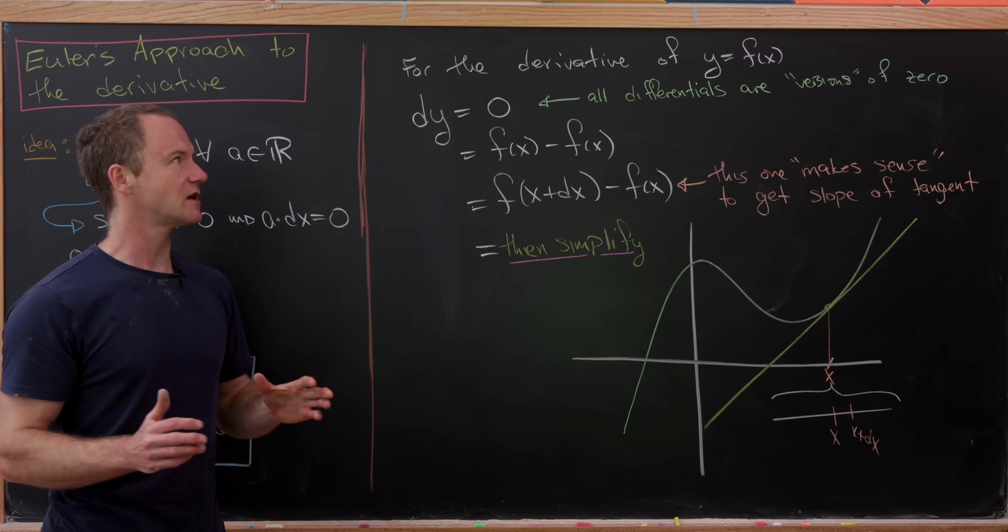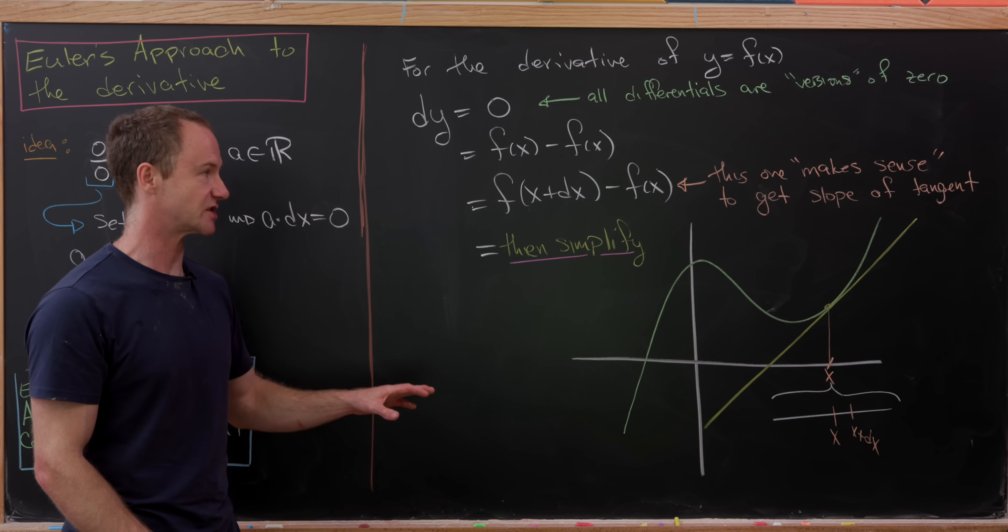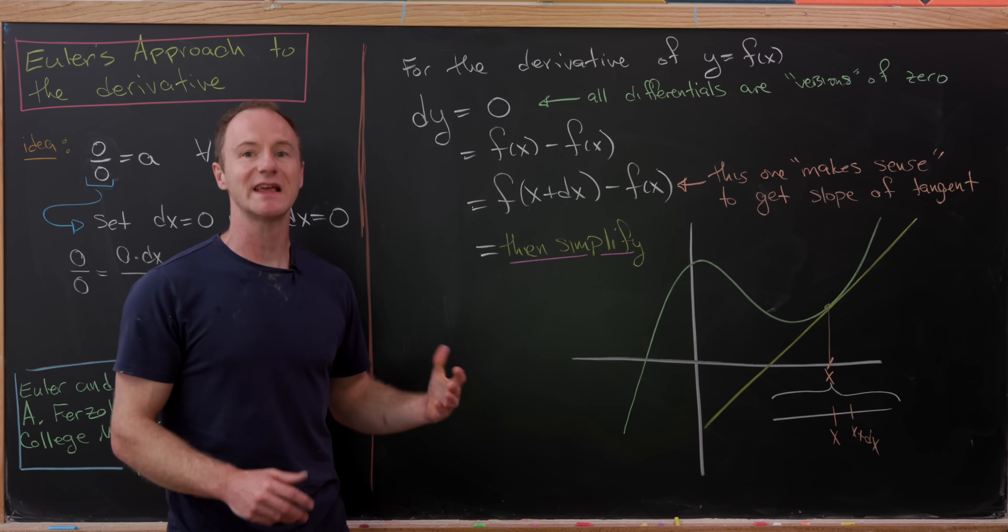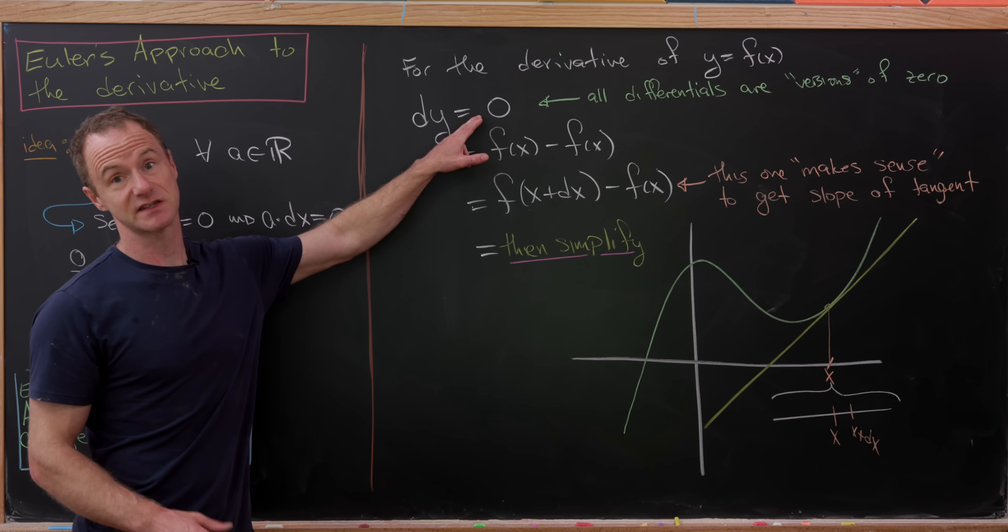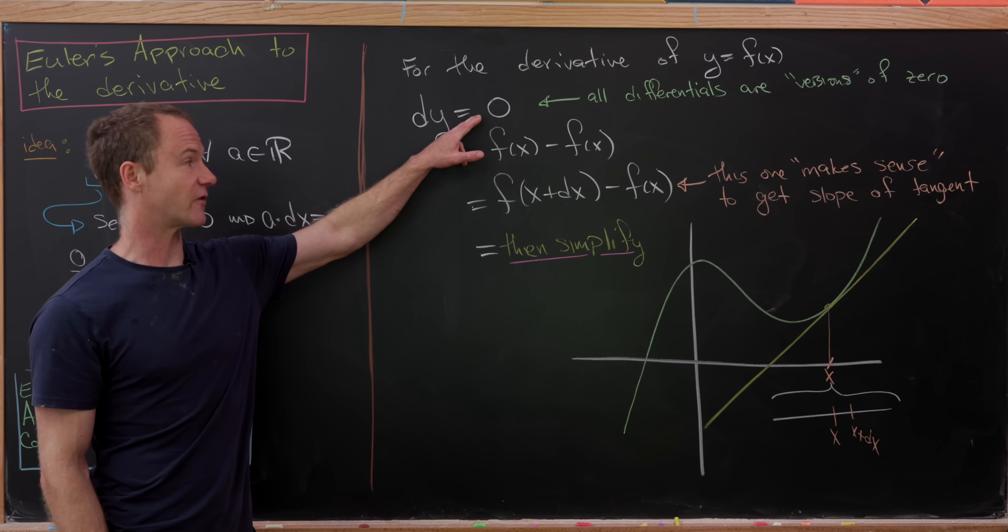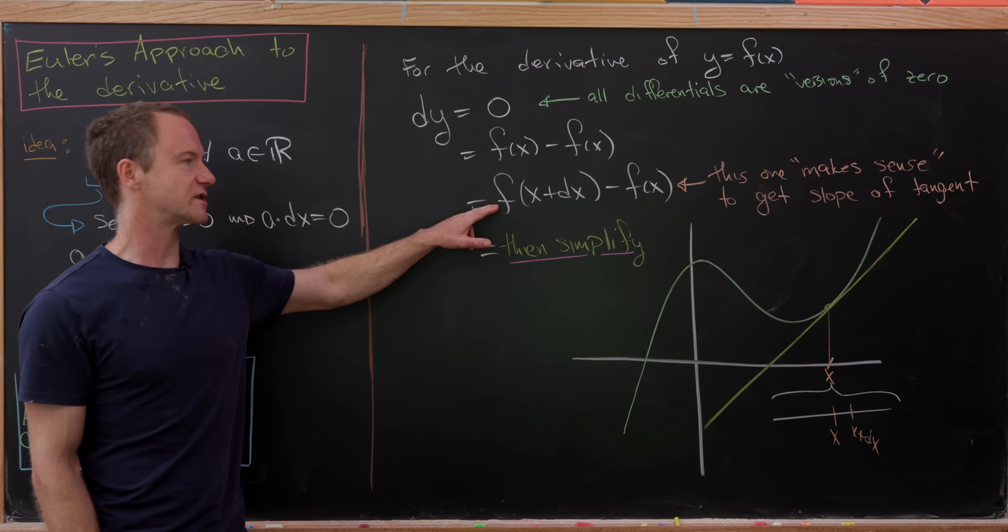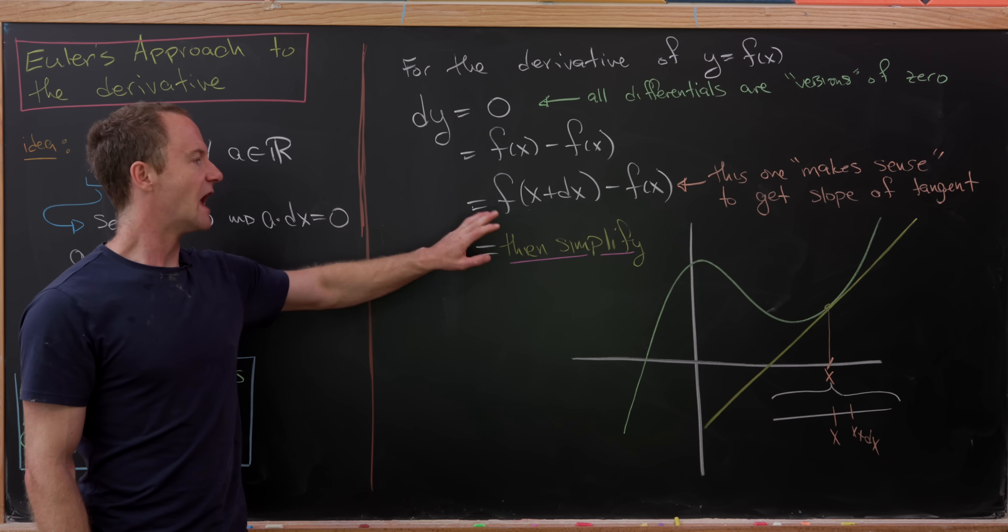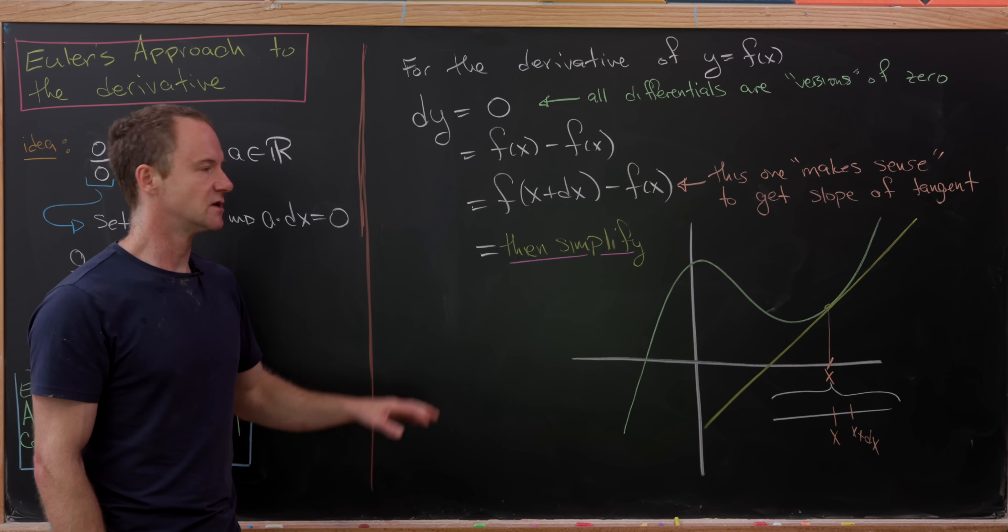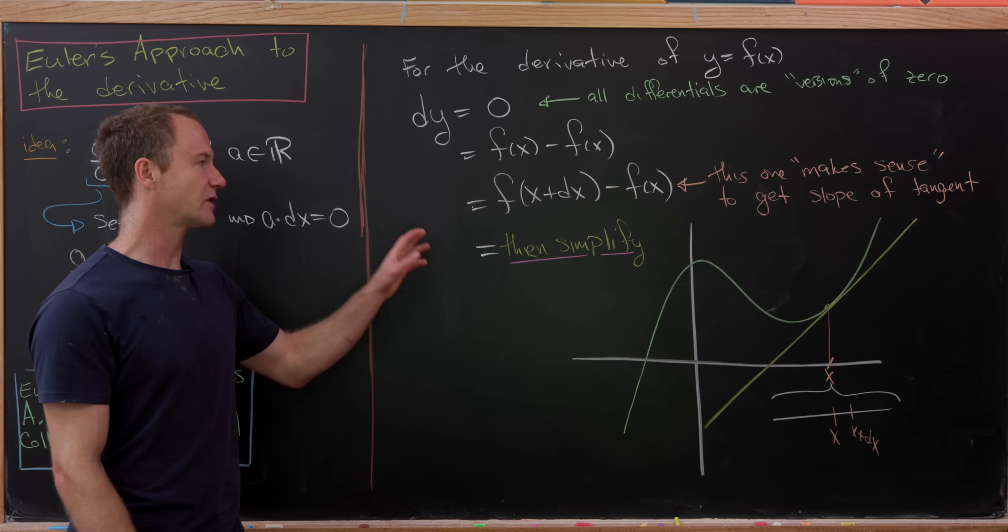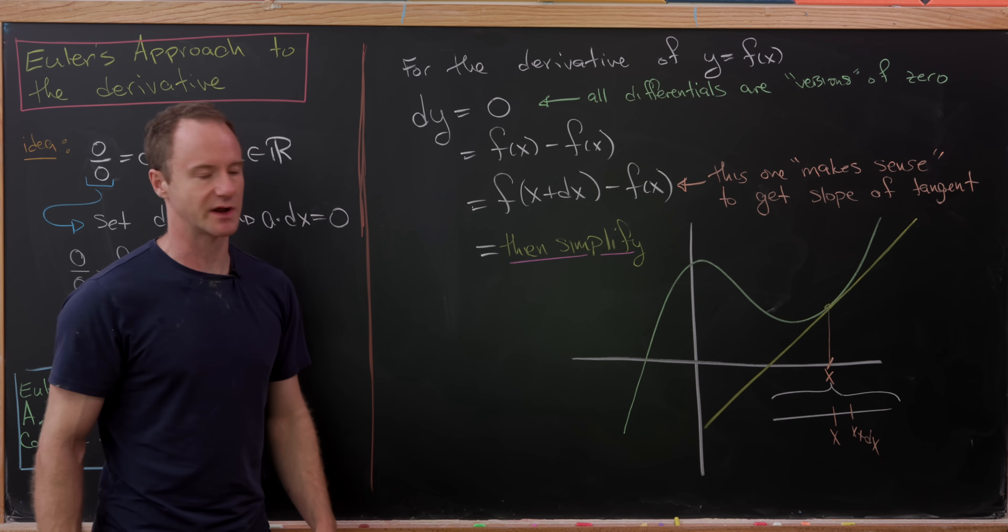Well, behind all of this is the fact that the derivative is supposed to give you the slope of the tangent. So if you want to get the slope of the tangent, you need to expand this differential, aka version of zero, in a way that works towards that overall goal. And then, of course, in all of our examples, we've simplified to something nice afterwards. The possibilities of that happening really depend on the function. And so here's a bit of a picture of what's going on here.